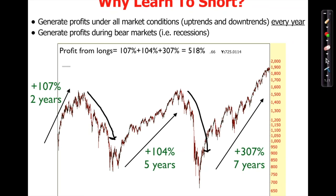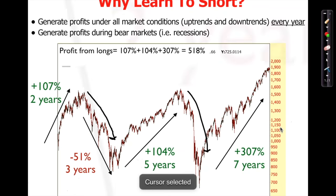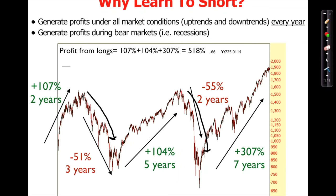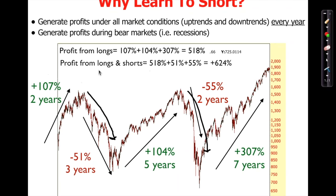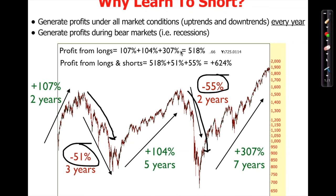But if you know how to short sell, as the market goes down 51% you make money — you short sell here and buy back here, making 51%. The market goes down again and you make 55%. If you profit from both the longs and the shorts, your total return increases significantly. You double your opportunities when you can short sell.